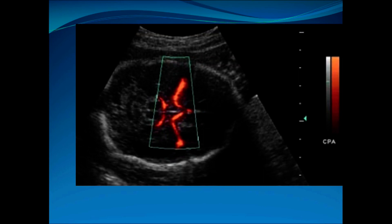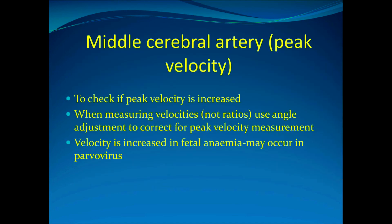Here we're looking at another image of the cerebral artery where we've applied power Doppler rather than colour flow. It demonstrates quite clearly how easy it is to see the vessel you need to sample — the one running up towards the anterior surface. You literally just put your sample gate onto that vessel running anterolaterally and you will get your waveform from that.